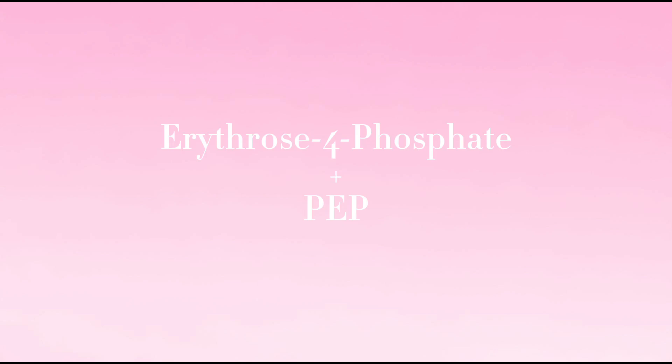Erythrose-4-phosphate plus PEP results in DAHP. For the metabolites: to the hydroshikimate, to the hydro-shikimate — shikimate made, shikimate, shikimic acid.